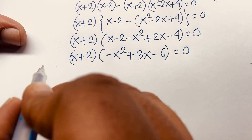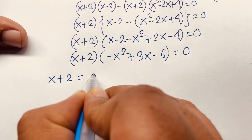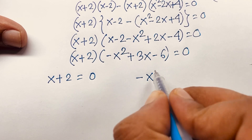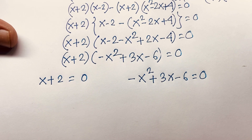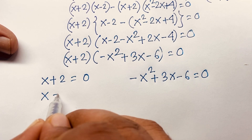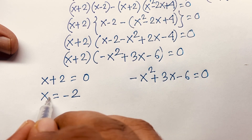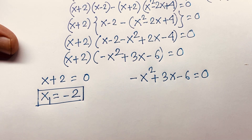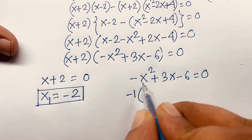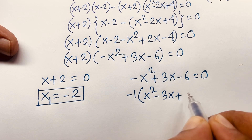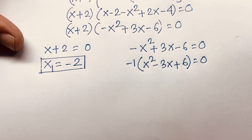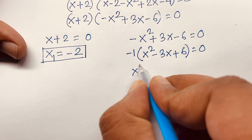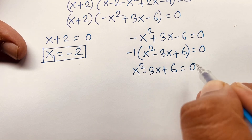We now have two cases. First case: x + 2 equals 0, giving x₁ equals −2. Second case: −x squared + 3x − 6 equals 0. Multiplying by −1 gives x squared minus 3x plus 6 equals 0. This is a quadratic equation.